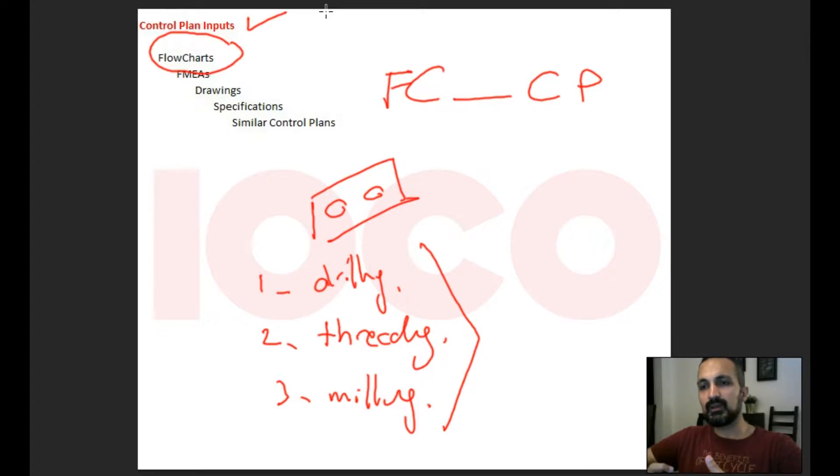Let's say you produced an aluminum part and the process consists of three different operations: drilling operation, then threading operation, and as the last operation is milling.